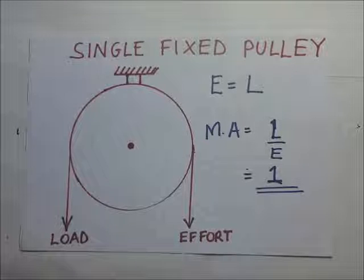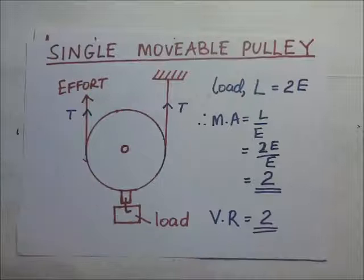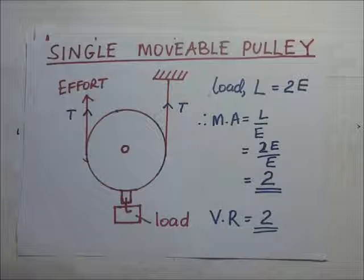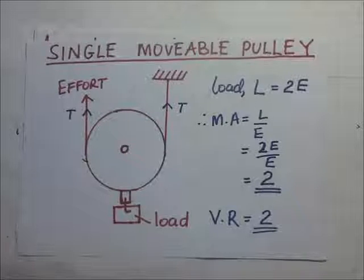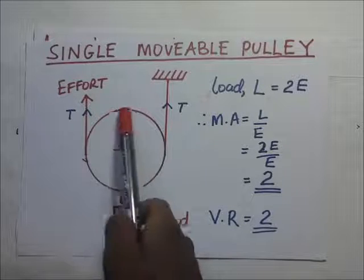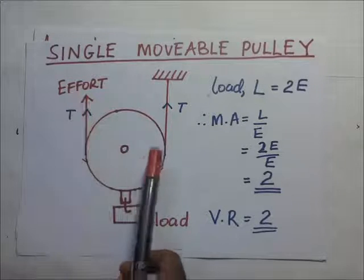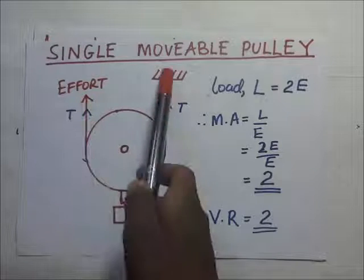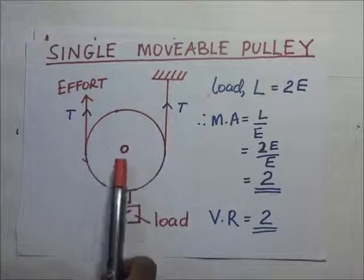So let's go on and look at the single movable pulley. In the single fixed pulley, the pulley was fixed. But with movable, this pulley, it is not fixed anywhere. It is movable. It means that the rope that is passing by, this is the rope that is fixed. But this pulley is movable.